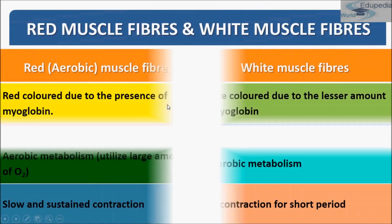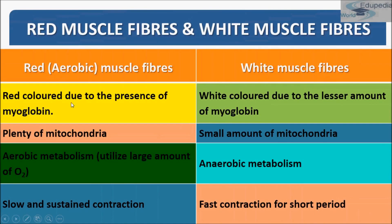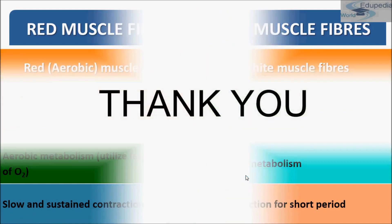The differentiation between red and white muscle fibers: red muscle fibers are red colored due to the presence of myoglobin, while white muscles have lesser myoglobin. Red muscle fibers have plenty of mitochondria, while white muscle fibers have fewer mitochondria. Aerobic metabolism takes place in red muscle fibers, whereas anaerobic metabolism occurs in white muscle fibers. Red muscle fibers show slow and sustained contraction, while white muscle fibers show fast contraction for a shorter period.